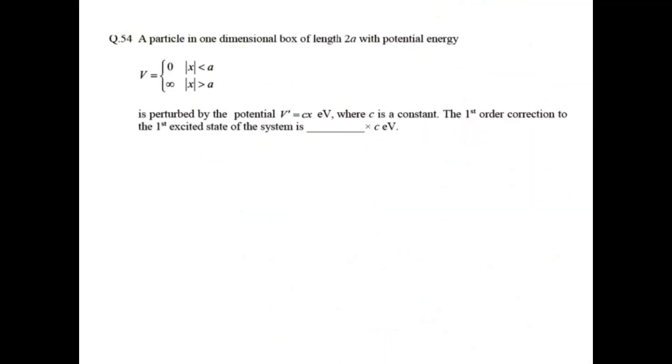So the first order correction to the first excited state of the system is 0 c electron volt. The answer given by GATE solution is also 0.